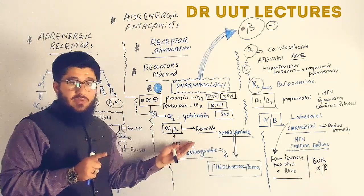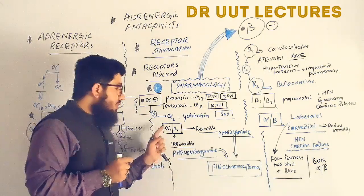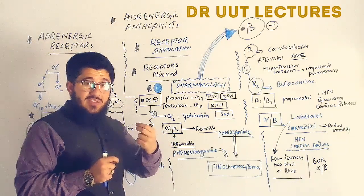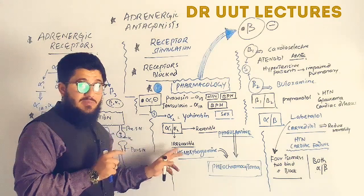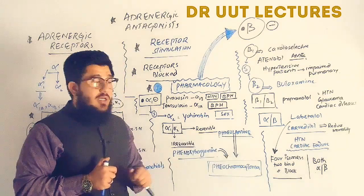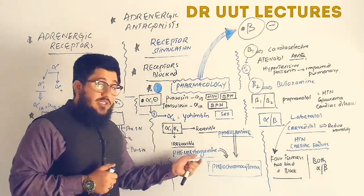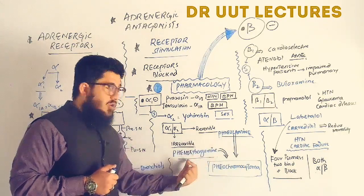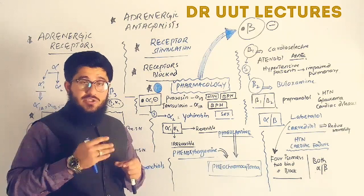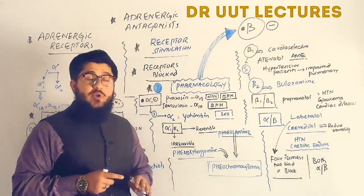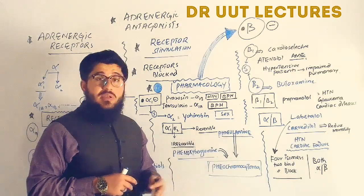Non-selective alpha blockers come in two types: irreversible and reversible. Phenoxybenzamine irreversibly binds to both alpha-1 and alpha-2 receptors, so the organ must form new receptors to resume function. Phentolamine reversibly binds to alpha-1 and alpha-2, so its effect can be overcome by increasing competitor drug concentration. Both phenoxybenzamine and phentolamine are used to treat pheochromocytoma — a tumor of the adrenal medulla releasing excess epinephrine. A key difference is half-life: phenoxybenzamine lasts 12-24 hours, phentolamine only 4-7 hours.